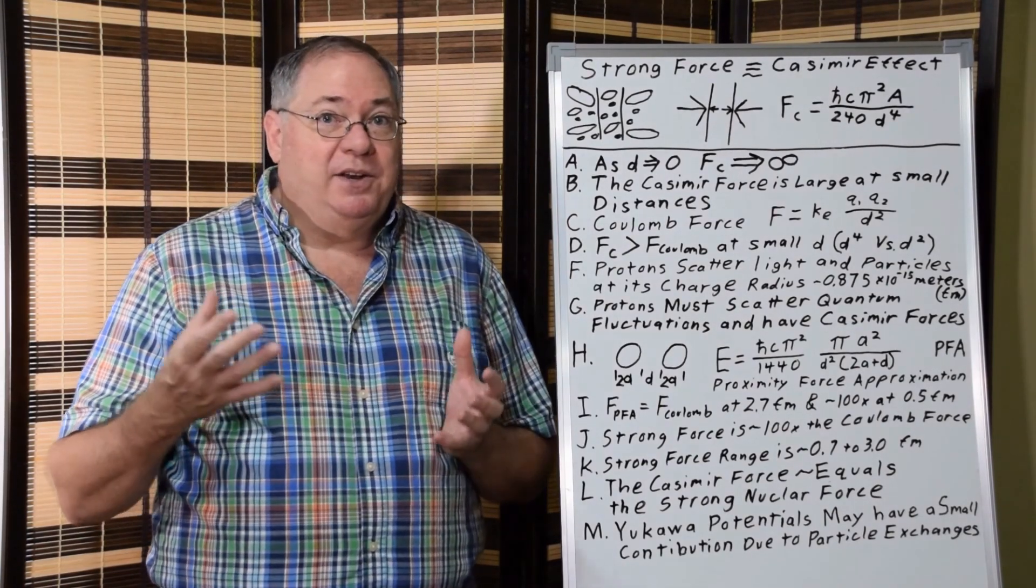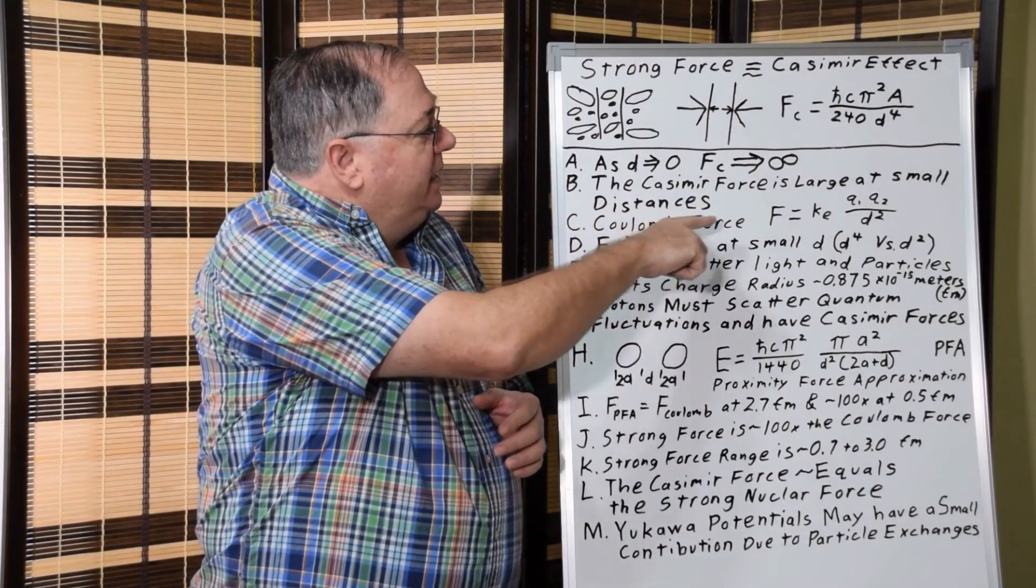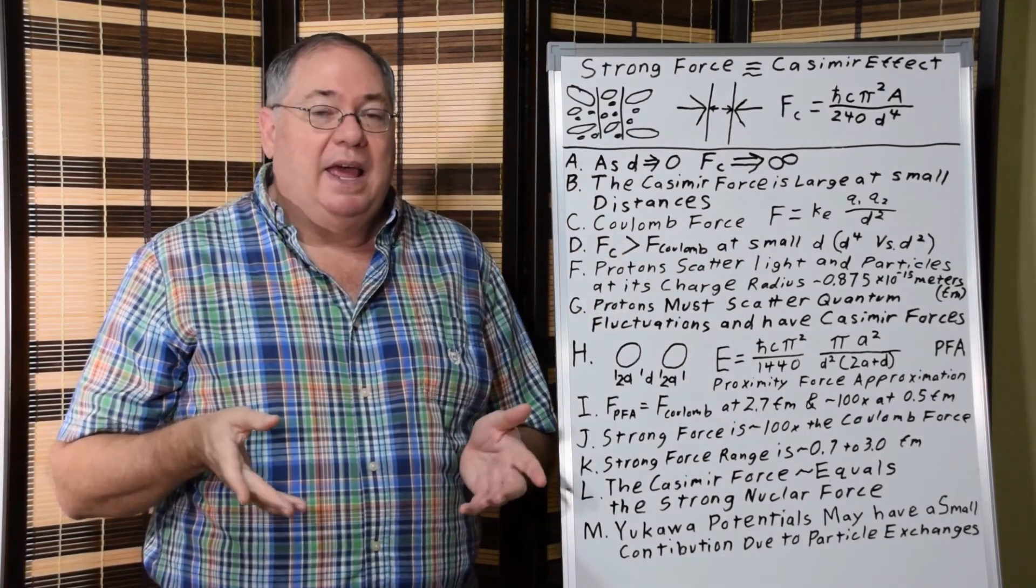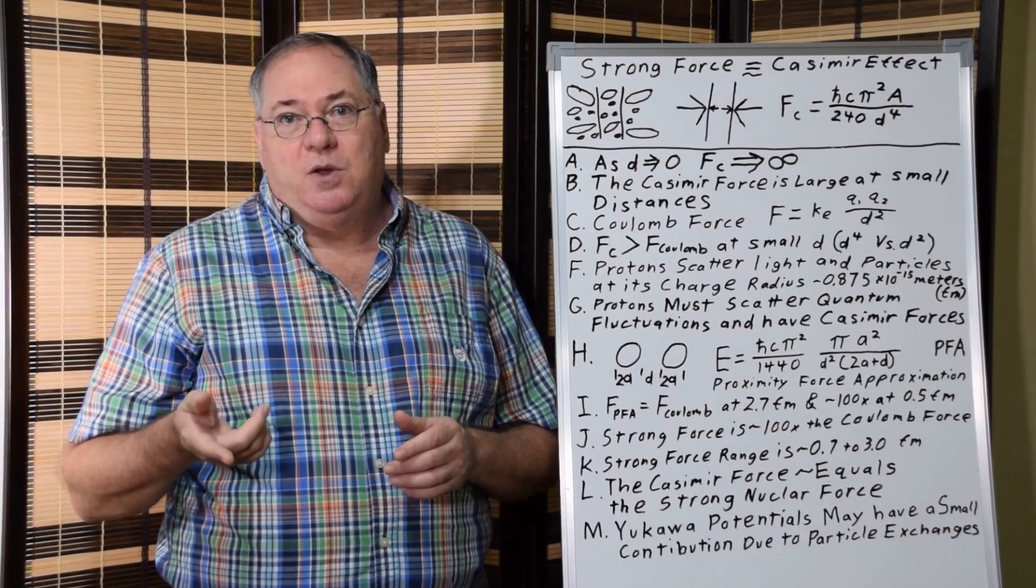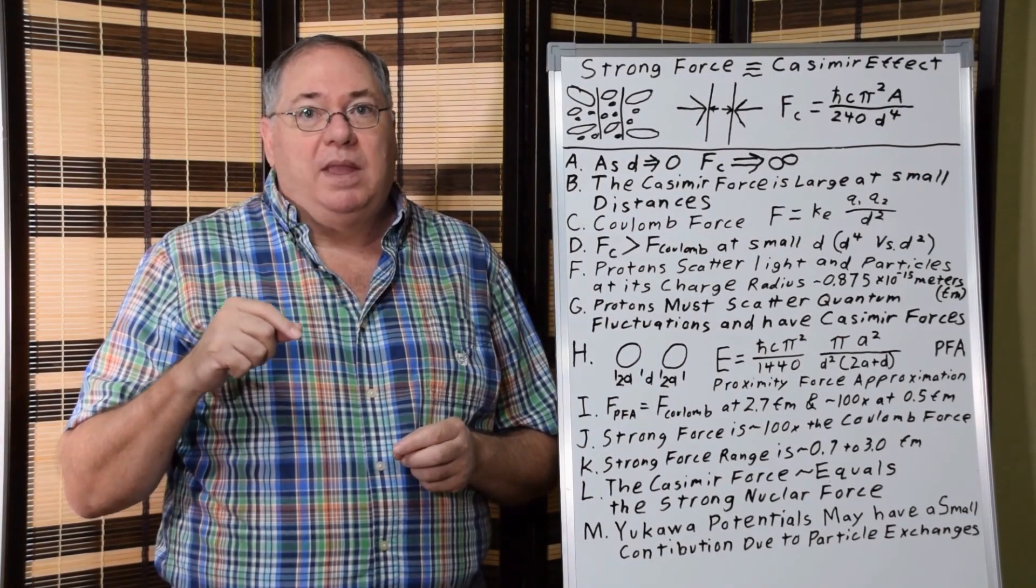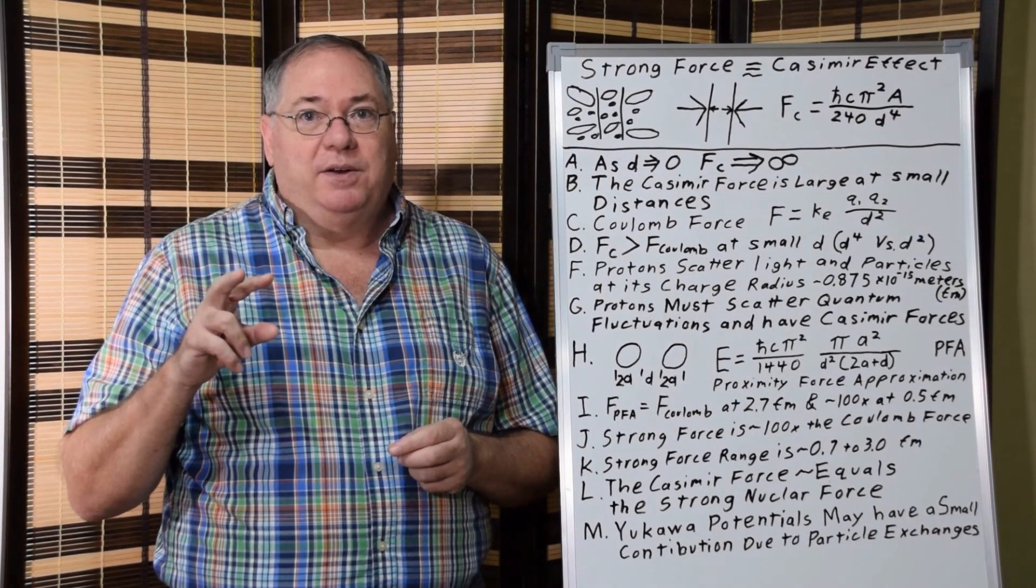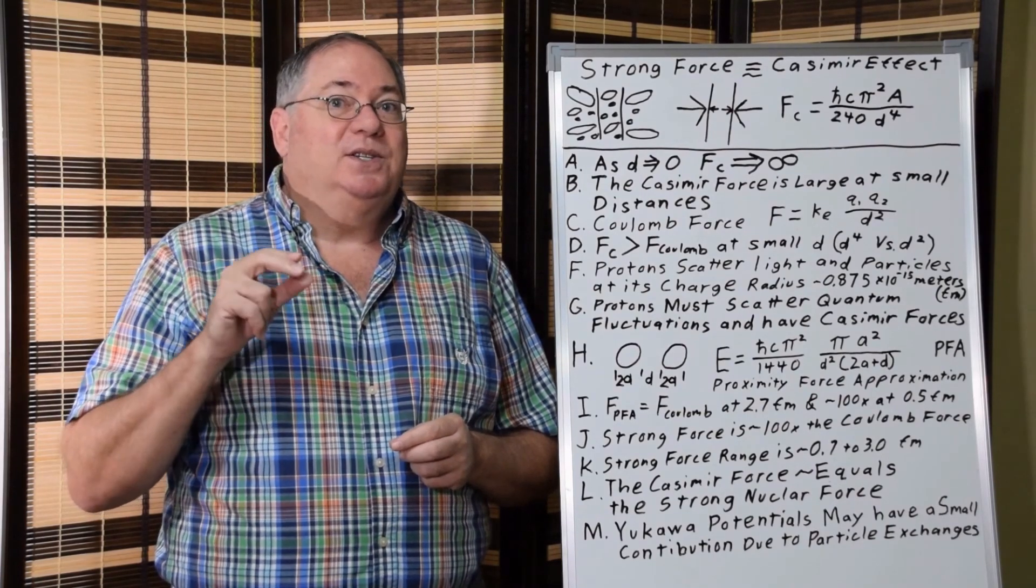There has to be an additional force interaction. And the Coulomb force is simply described by this equation: F equals the Coulomb constant, 1 over 4 pi epsilon nought, times the two charges multiplied by each other, divided by the distance squared.